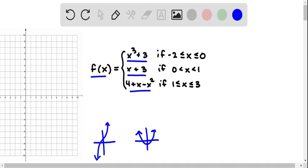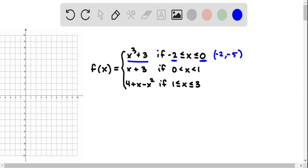Okay, I'm going to start with the top piece, and to find a couple of points, I'm going to substitute negative 2 into the function. Negative 2 cubed is negative 8, plus 3 is negative 5. So we have the point negative 2, negative 5, and I'm also going to substitute 0 into the function. 0 cubed plus 3 is going to be 3. So let's plot those points. Negative 2, negative 5, and 0, 3.